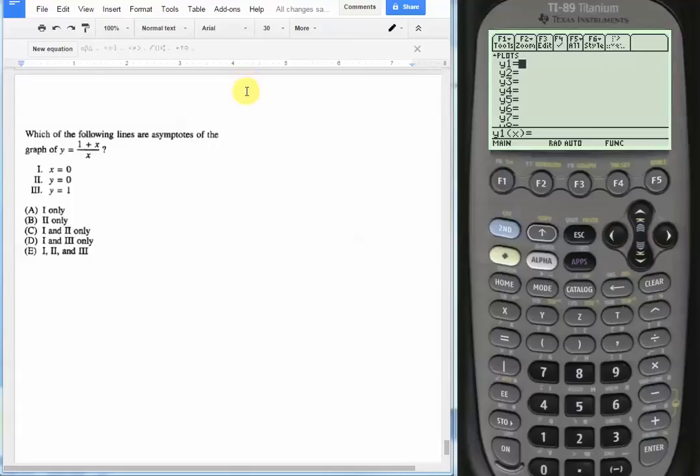Okay, in this video we're going to learn how to find asymptotes on the graphing calculator. The question asks us which of the following lines are asymptotes of the graph of y equals one plus x over x.